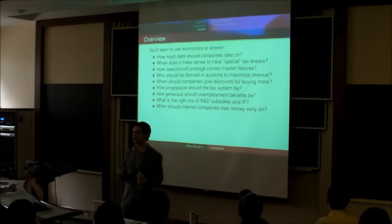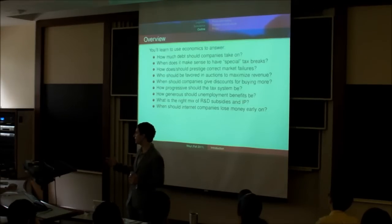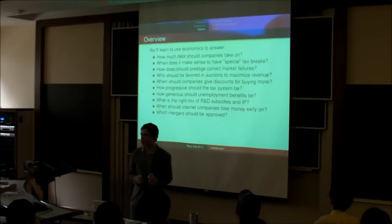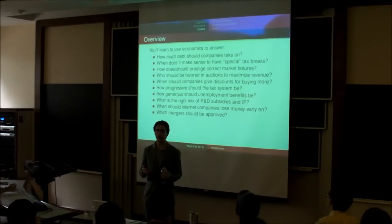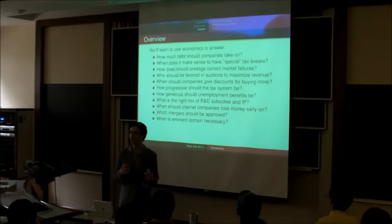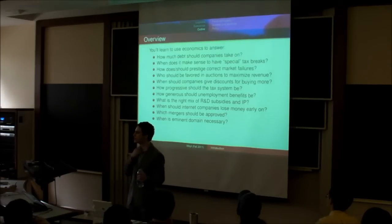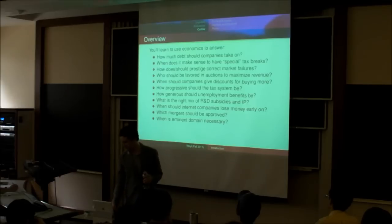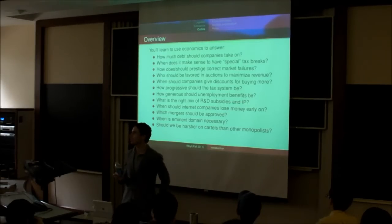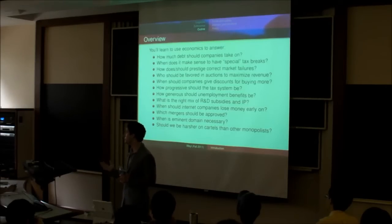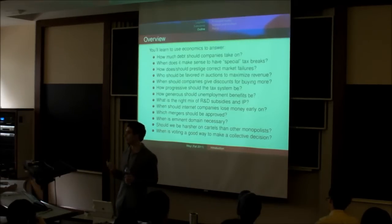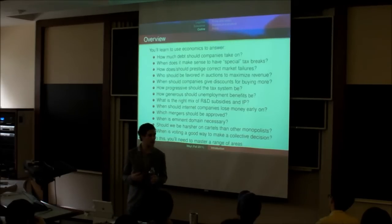When does it indicate that something's wrong with an internet company, that it's losing a lot of money to begin with, and claiming it's going to make it up later? Or when is that a good part of your business strategy? When should we approve mergers between different companies, or when are they likely to be too threatening to competition, and therefore we shouldn't approve them? When is it necessary to use eminent domain to build a road, or a bridge, or a research facility, and when should we leave it to the private market? When should we be harsher on monopolies that are created by collusion, or cartels, than on a monopoly that was just created by an individual on their own? And when is voting a good way to make a decision as a group, or when should we use some other type of approach?